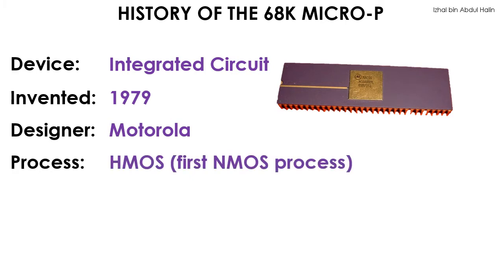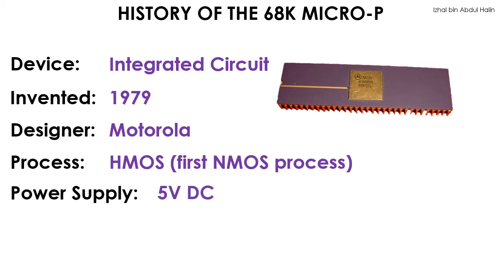HMOS technology is based on the NMOS technology, and it allows thousands of N-channel transistors to be fabricated on one silicon die. Thus, making it a suitable technology to be used to fabricate the 68K microprocessor, which has about 68,000 transistors on board.